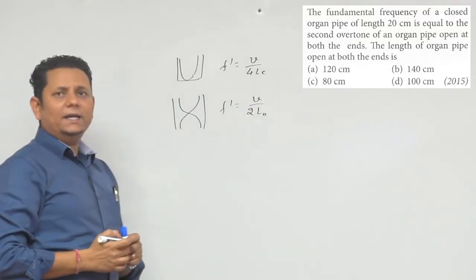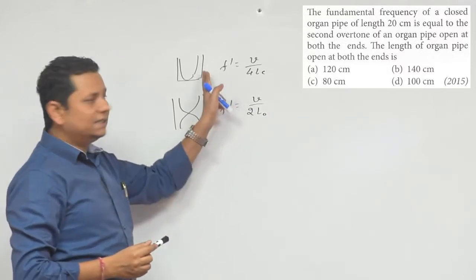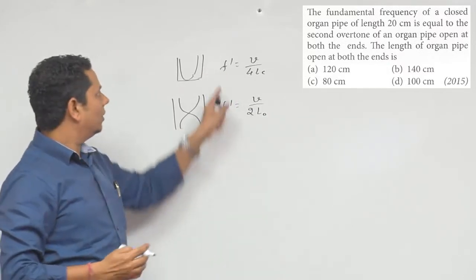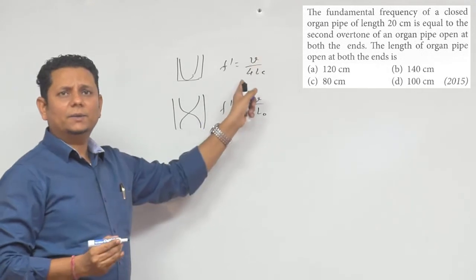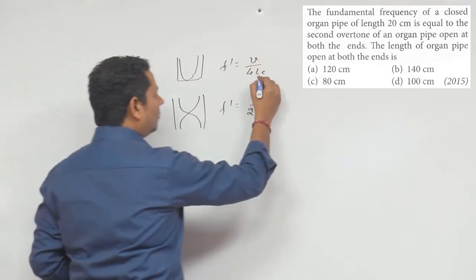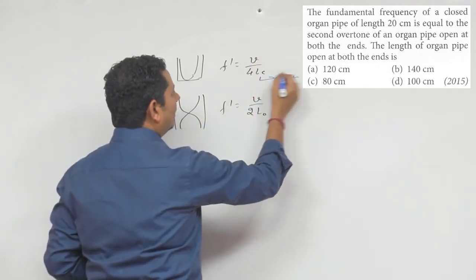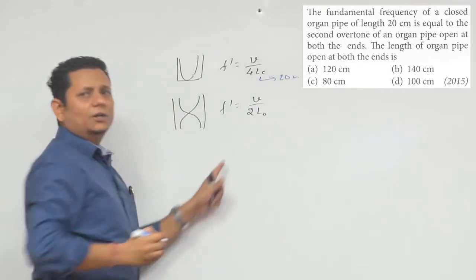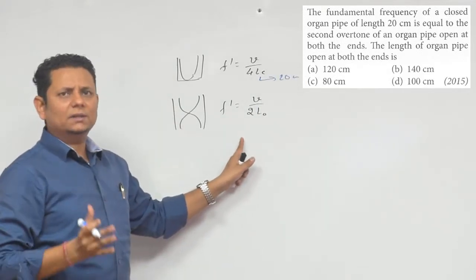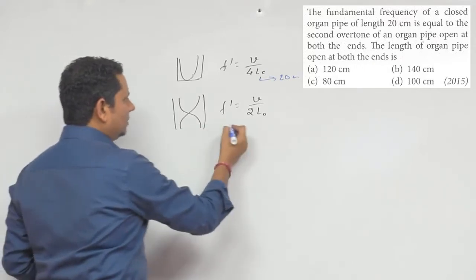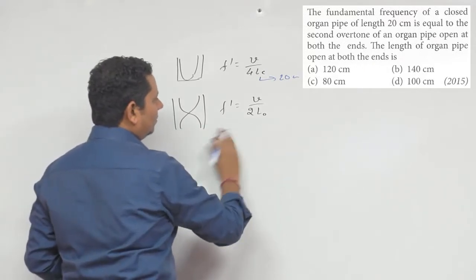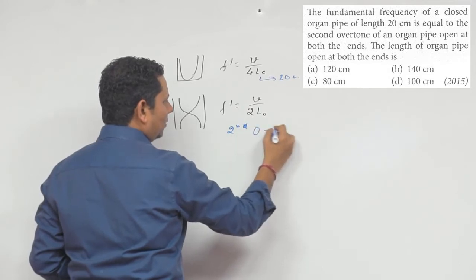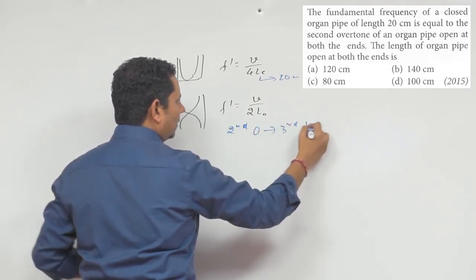The fundamental frequency of the closed organ pipe has length 20 cm, which is equal to the second overtone of the open pipe. The second overtone means the third harmonic. So the second overtone of the open organ pipe will be equal to the third harmonic.